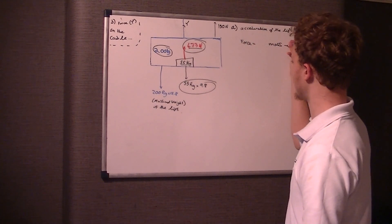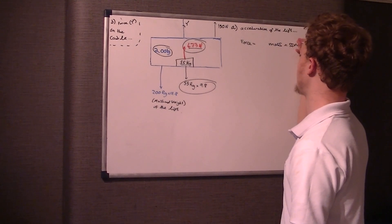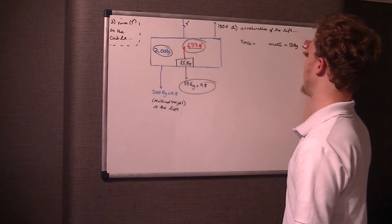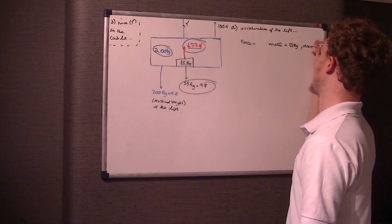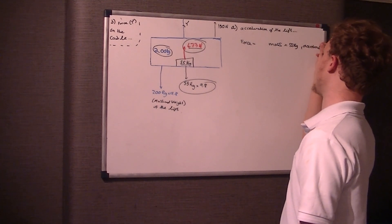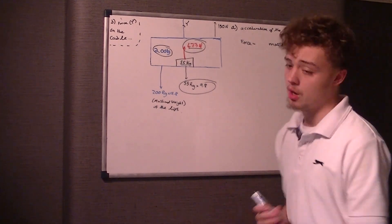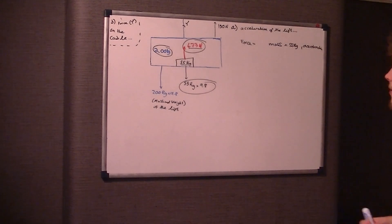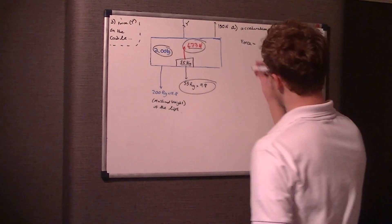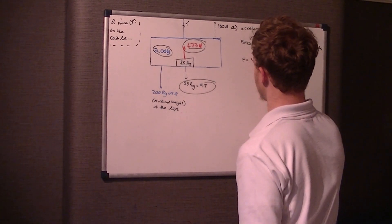I'm going to focus on the 55 kilogram box — the mass is 55 kilograms and we want the acceleration. We can't work out time or distance, so there are no SUVAT equations involved. The obvious equation to use is F = ma.